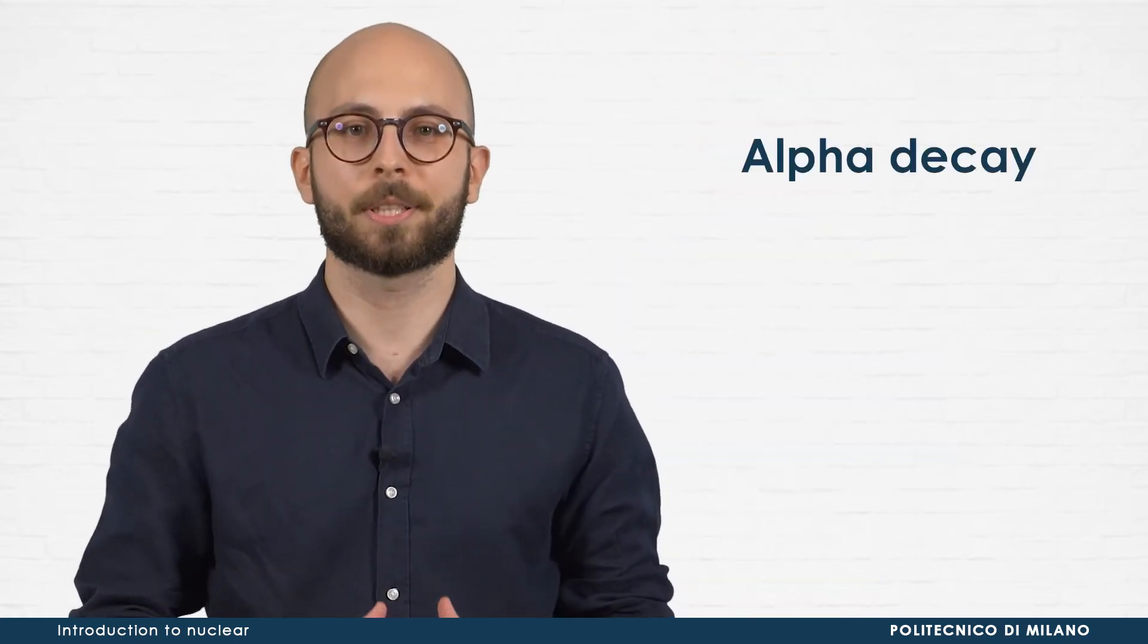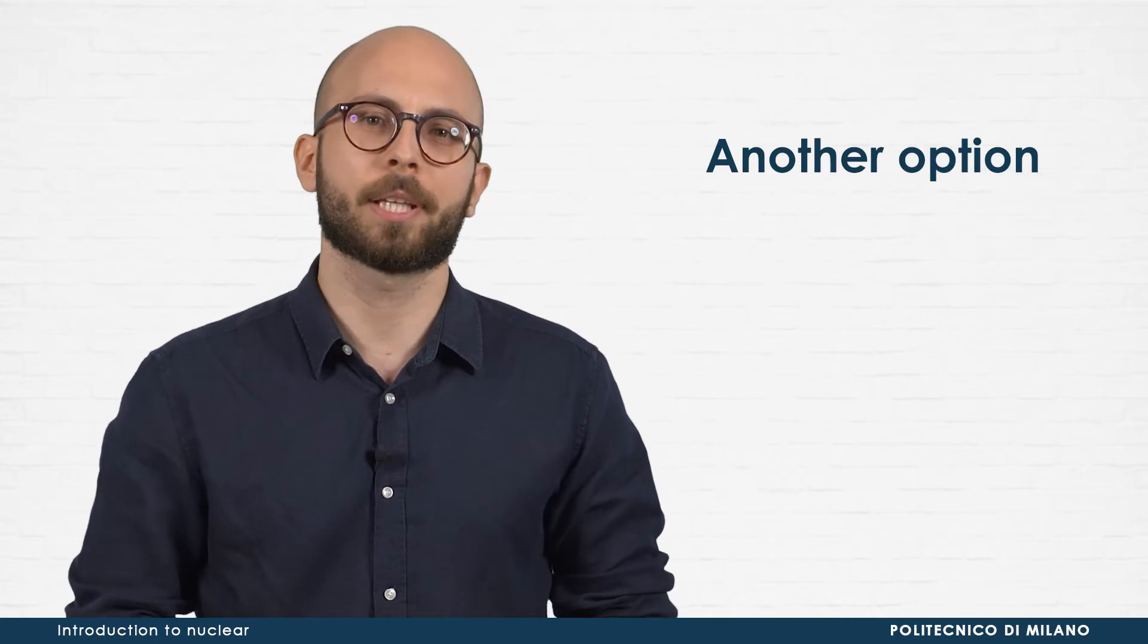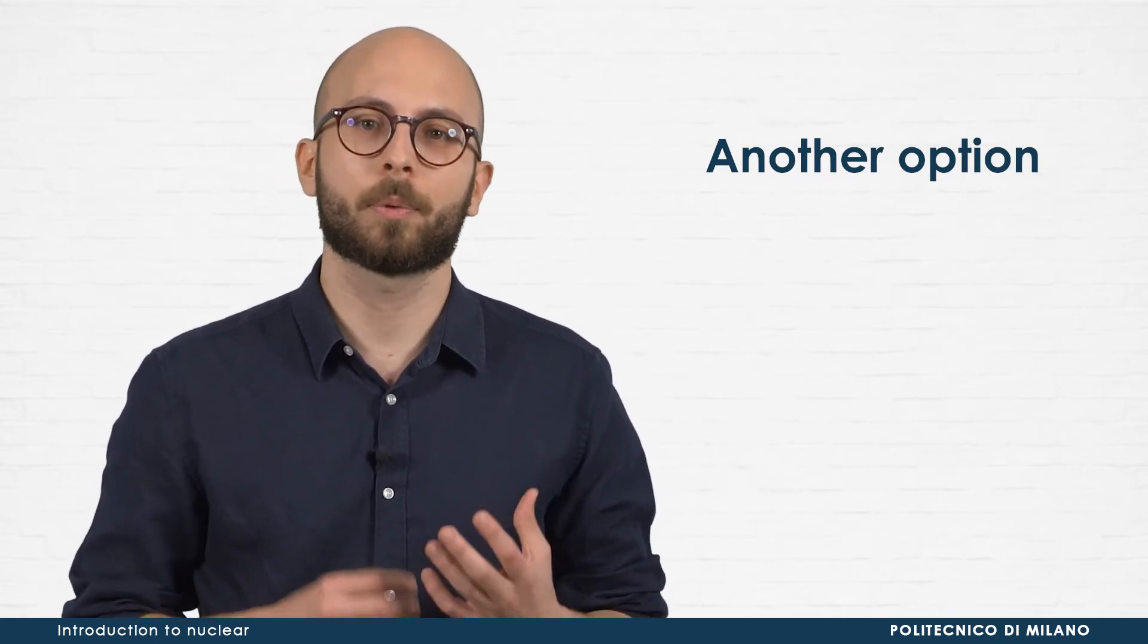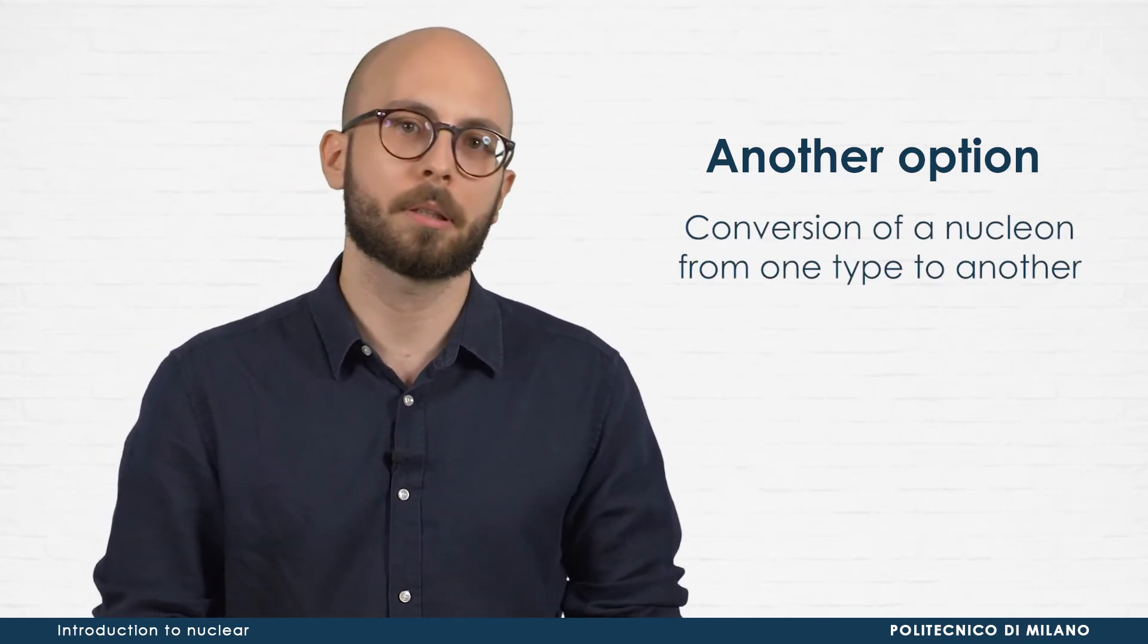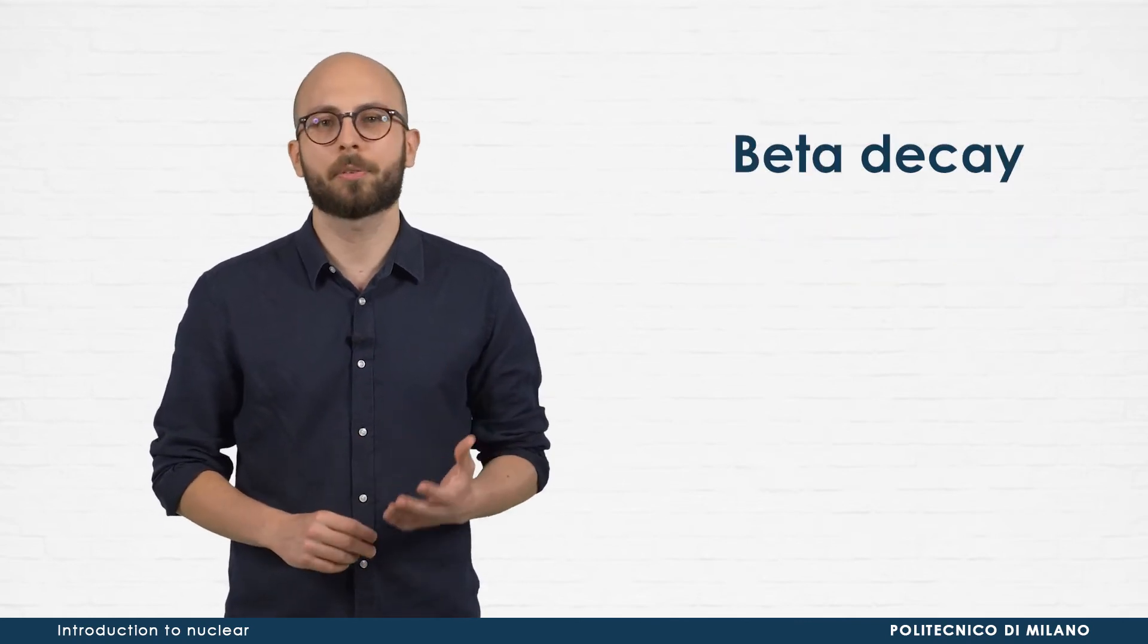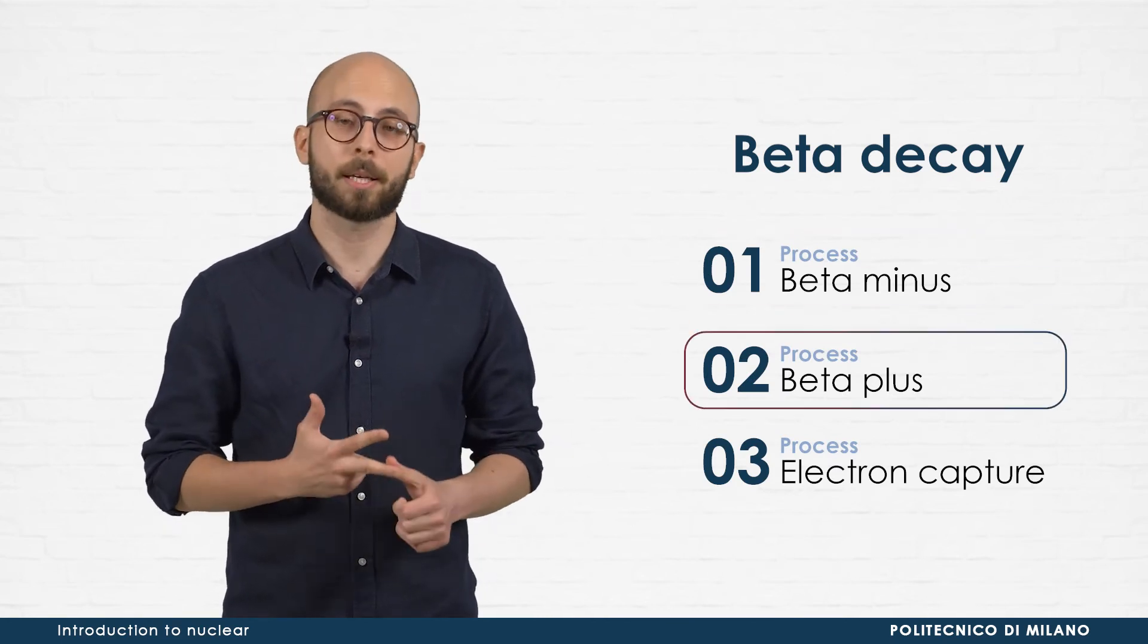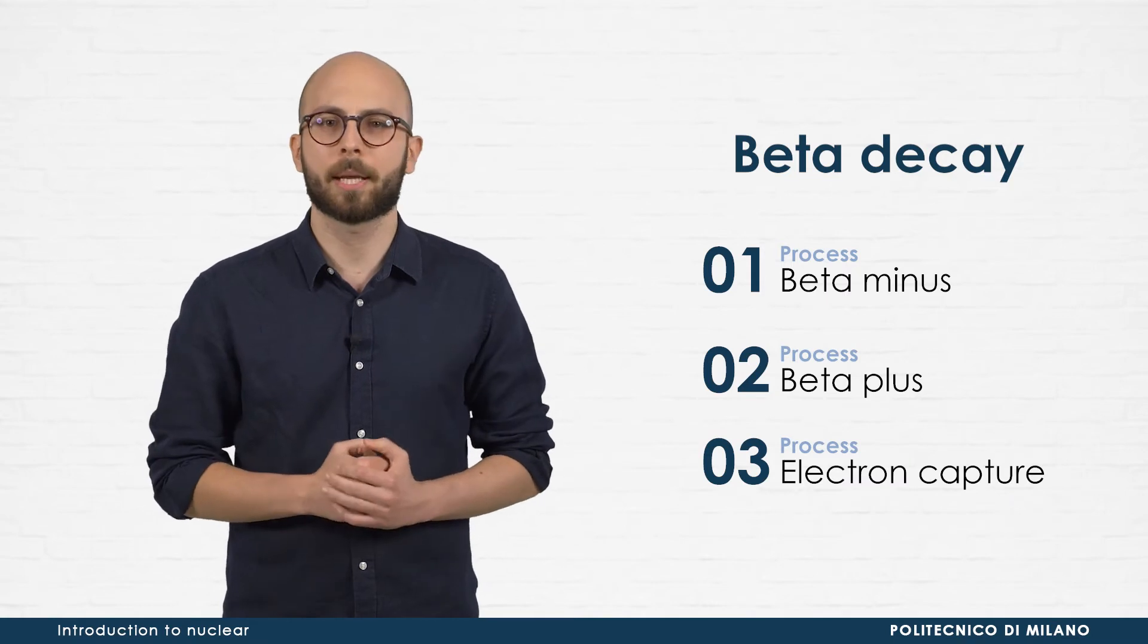Alpha decay consists in the release of a small pack of nucleons from a heavy nucleus. There is another option that nature gives to lighter nuclei, a decay mode which consists in the conversion of a nucleon from one type to another. This is the so-called beta decay, a name that actually refers to three different processes: beta minus, beta plus and electron capture. Let's have a look at their main features.